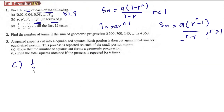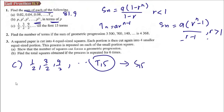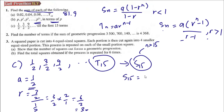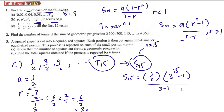For part C, the series is 1/2, 3/2, 9/2 until T15, so we want S15. A = 1/2, R = (3/2) ÷ (1/2) = (3/2) × (2/1) = 3. So A = 1/2 and R = 3. Since N = 15, we substitute: S15 = (1/2) × (3¹⁵ - 1) / (3 - 1).